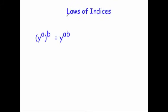The last law of indices is what I call a power of a power. If we have y to the power of a, all to the power of b, the answer is y to the power of ab — you multiply the powers together. So if you had y cubed all squared, you multiply the powers: 3 times 2 gives y to the power of 6.